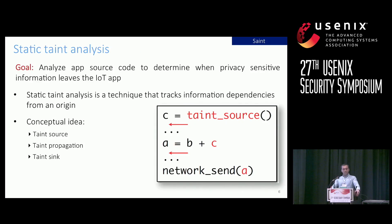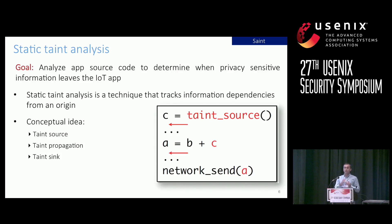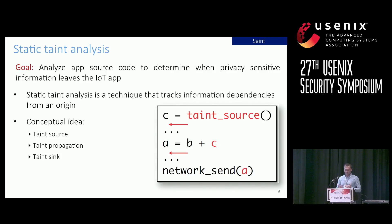After identifying the sensitive data in IoT apps, our goal is to analyze application source code to determine when privacy-sensitive data leaves the application. The core methodology we use is static taint analysis at the source code level. In static analysis, sensitive information is first identified at a taint source, where a taint label indicating the information type is assigned. Taint propagation tracks how labeled data impacts other data in a way that might lead back to the original sensitive data. Finally, the impacted data is identified at a taint sink before it leaves the system. In IoT applications, the taint sinks are usually internet or messaging services.